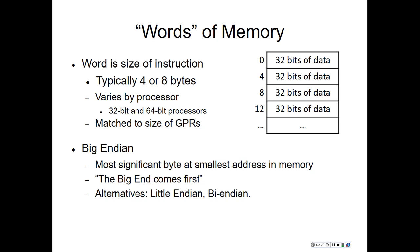Typically, the size of the word is matched to the size of the general-purpose registers. Word-alignment means that every memory address starts at a multiple of the word size. So in MIPS 32, every memory access has to start at a multiple of four.